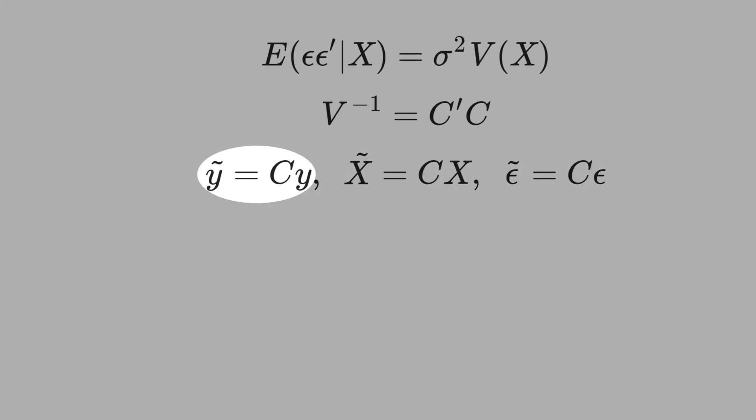Y tilde is equal C times Y. X tilde equals C times X. And the error tilde equals C times the old error term. Then, let's write the new regression. Y tilde equals X tilde times beta plus error tilde.